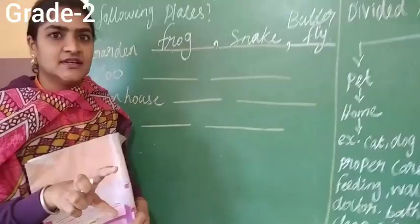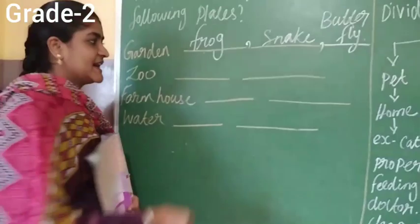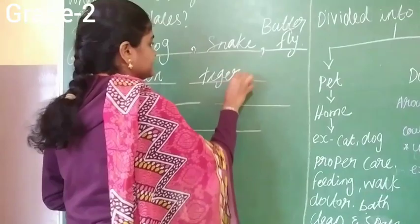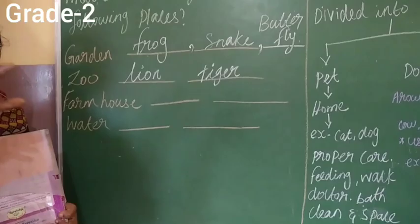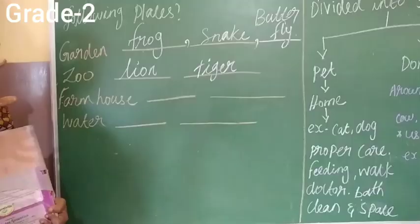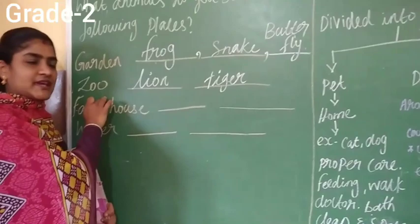Next, in the zoo — what are the major animals you can see? Lion and tiger. In the zoo, lion and tiger are kept in separate cages. They are very dangerous animals.